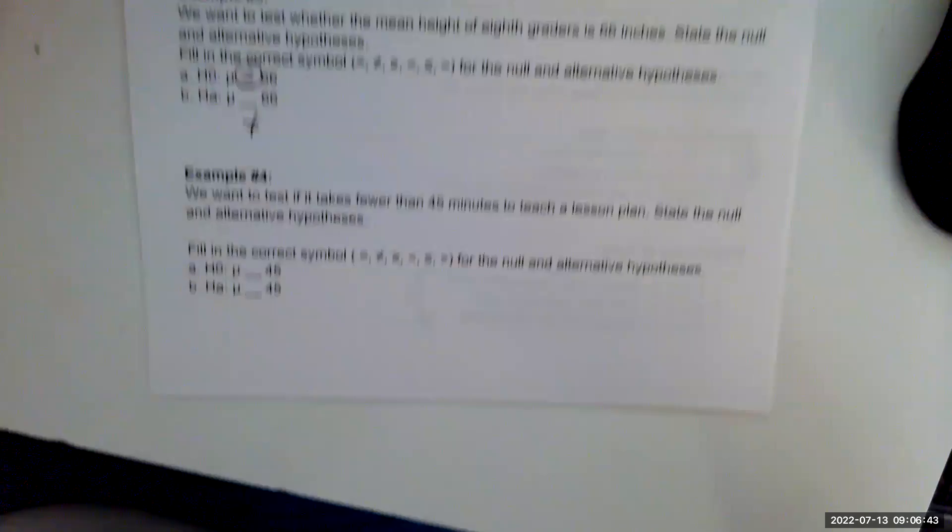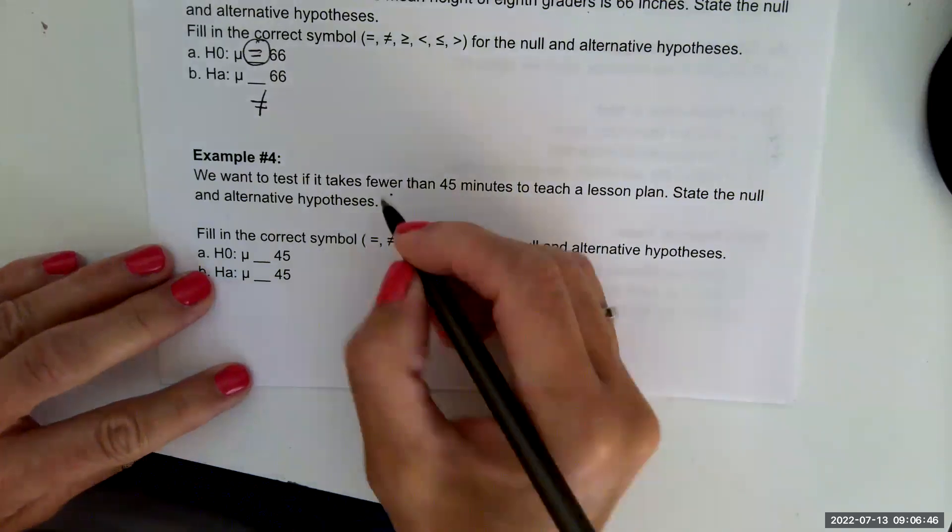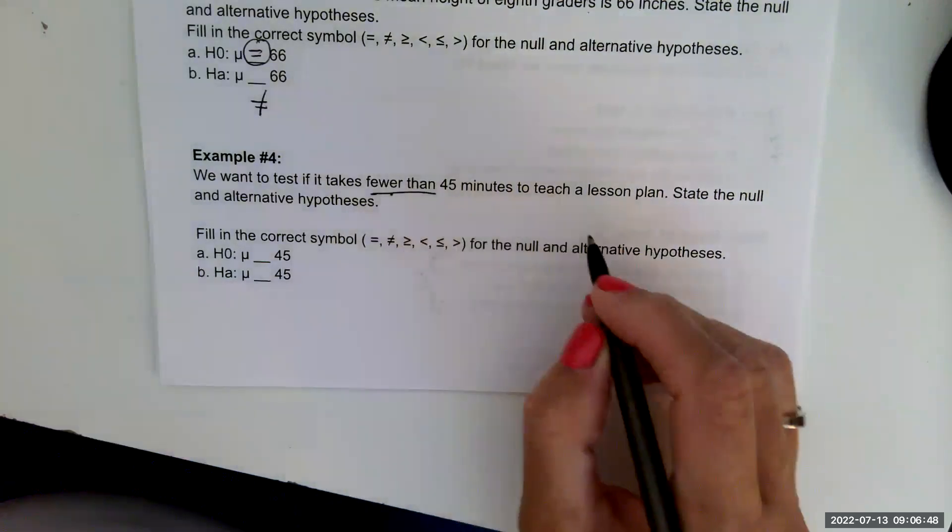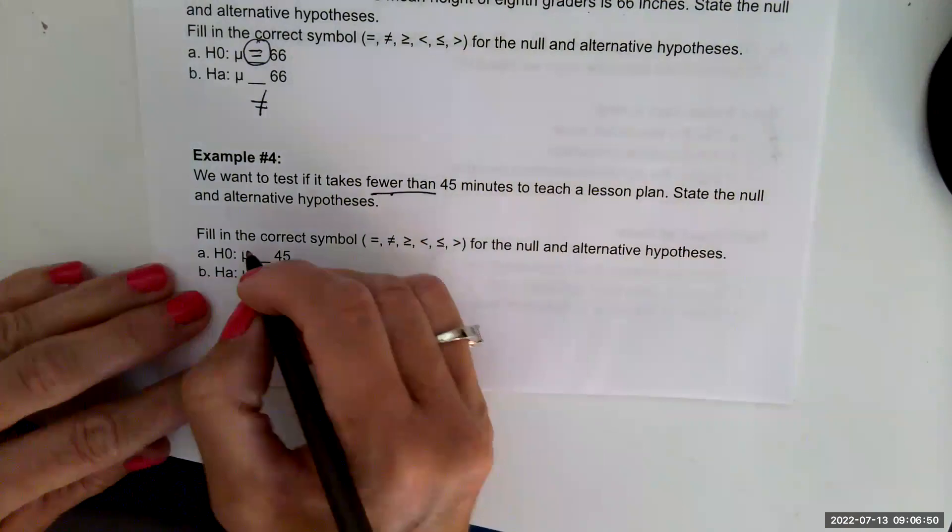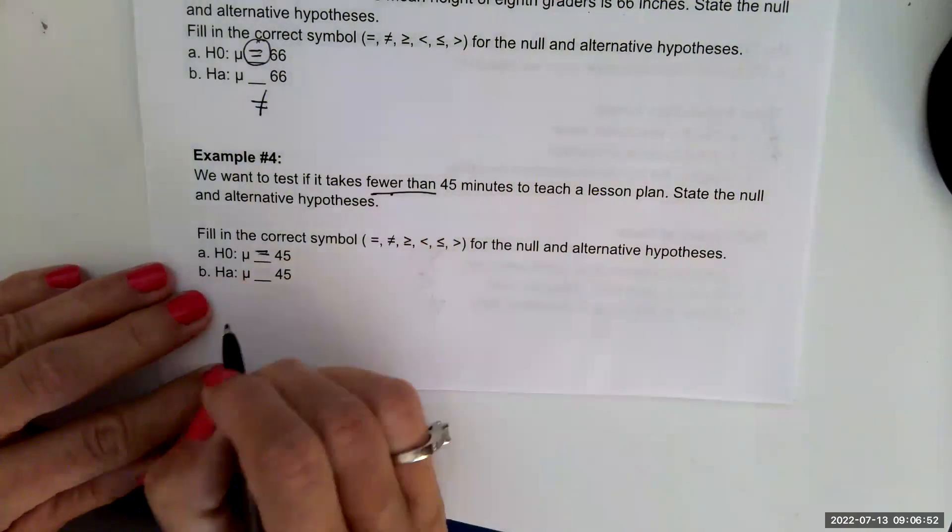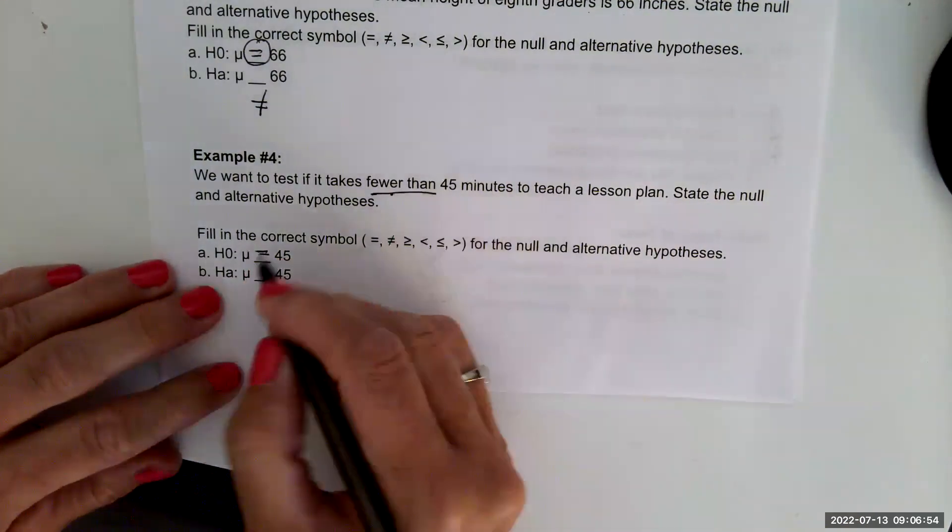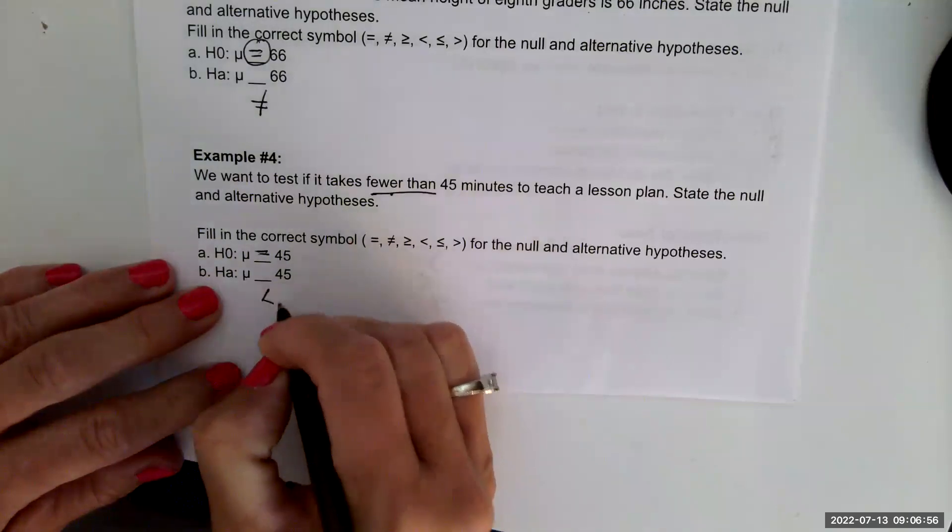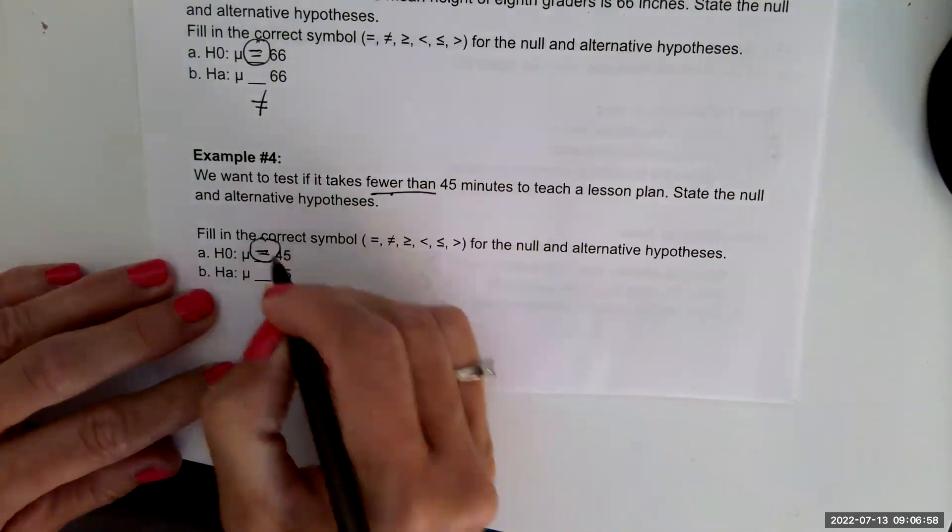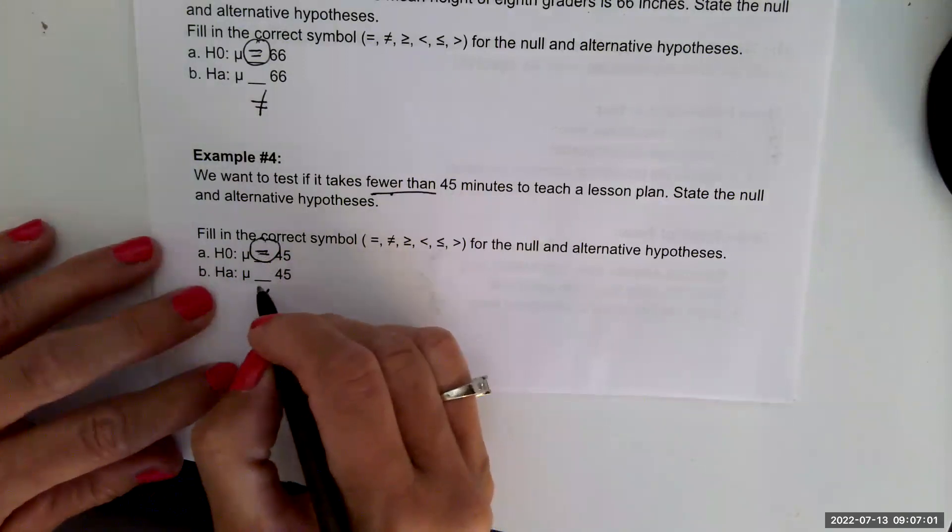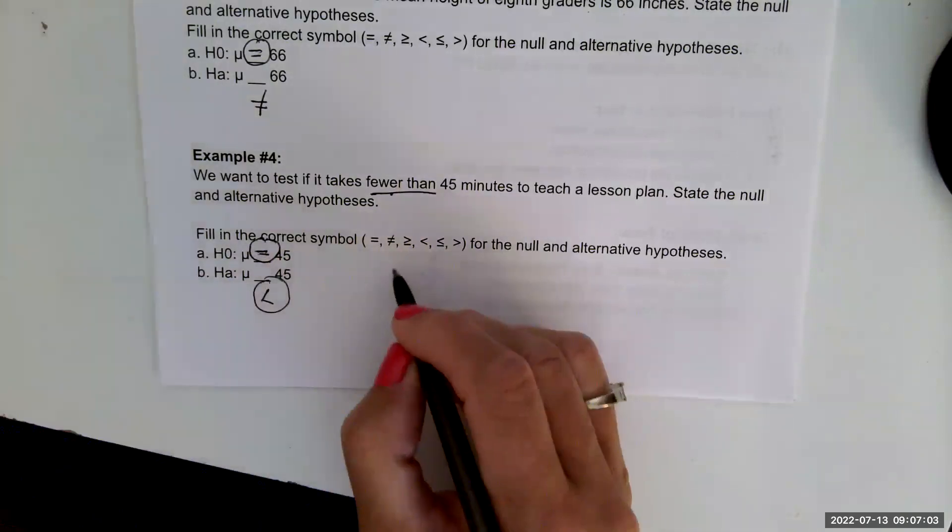Example four says we want to test if it takes fewer than 45 minutes to teach a lesson plan. State the null and alternative. The null is always an equal to and they want to test to see if it's fewer, so that would be a less than. So the null hypothesis is always an equal to and the alternative is the other choices.